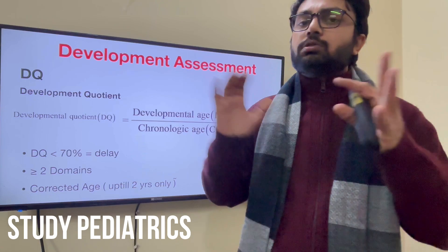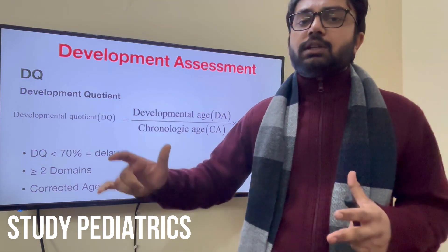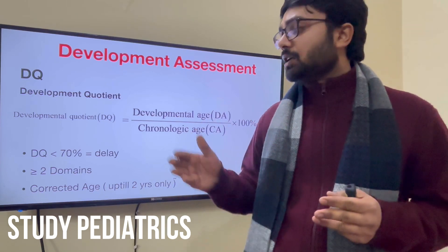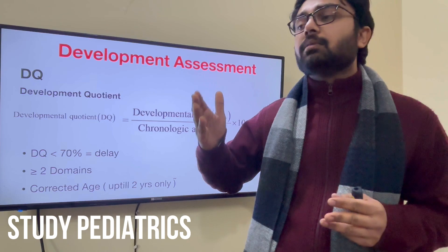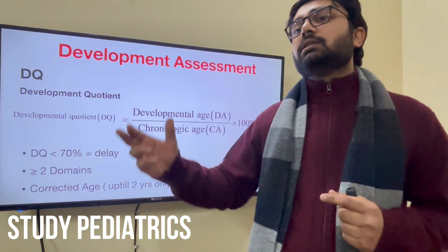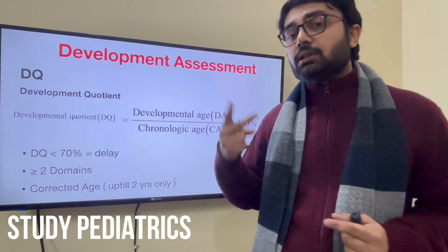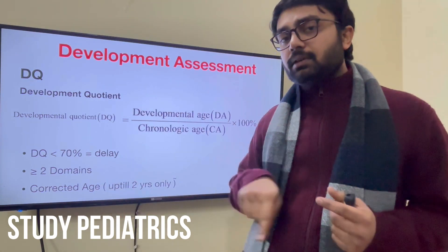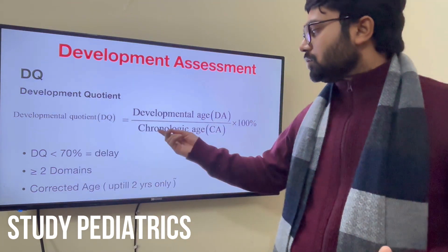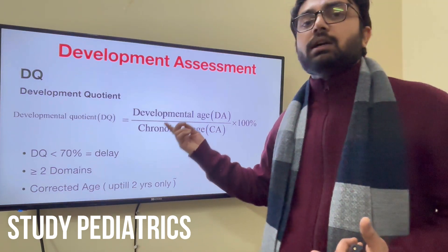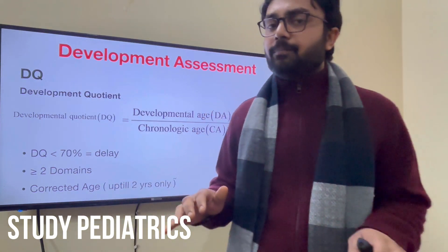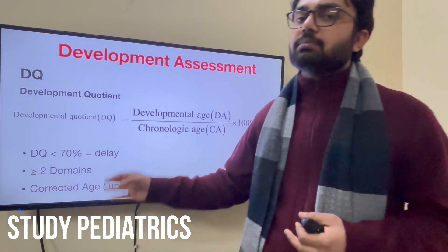Next is corrected age. Suppose in the previous case a mother says the child had a premature delivery — the child was born at 32 weeks of gestation. The child is preterm at 32 weeks, so his corrected age will be 6 months minus the prematurity. He was premature by 2 months: 40 minus 32 is 8 weeks, which is 2 months. So his corrected age will be 6 minus 2, that is 4 months. The chronological age will be 4 months, and the developmental age was 3 months, so 3 divided by 4 is 75% — so he is not delayed.